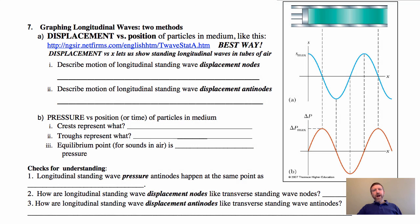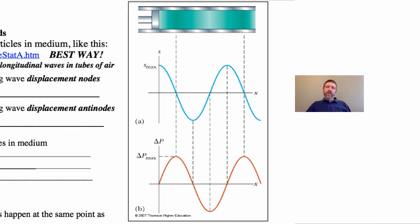Next up we're going to talk about how you graph longitudinal waves. There are actually two methods. You can either graph displacement versus position or pressure versus position, and I'm going to show you both. But there's a distinct advantage to the first way we're going to do it, which is displacement versus position.